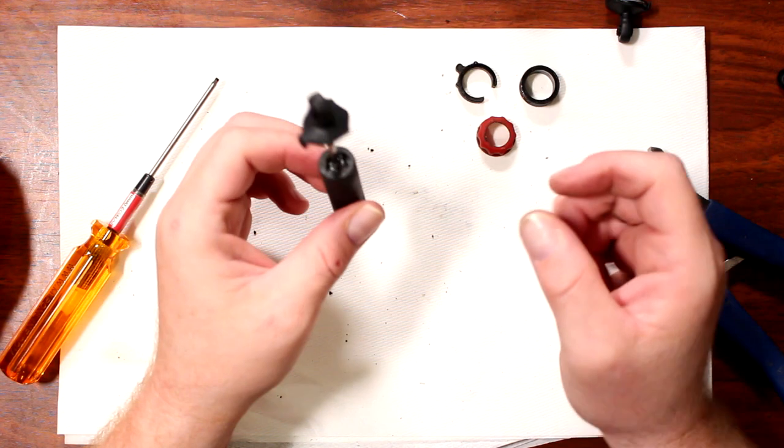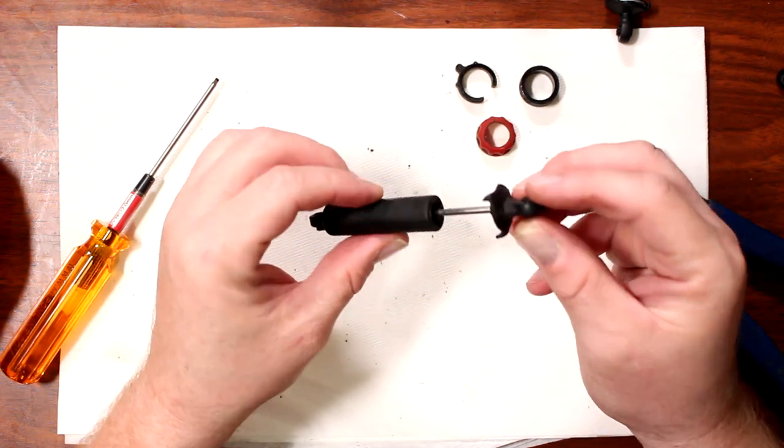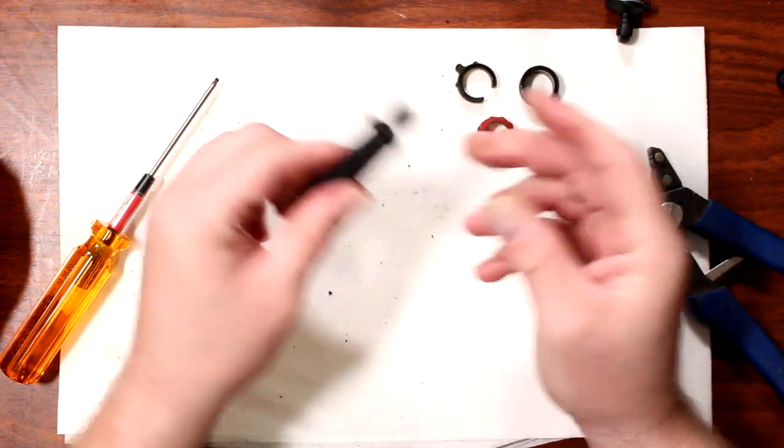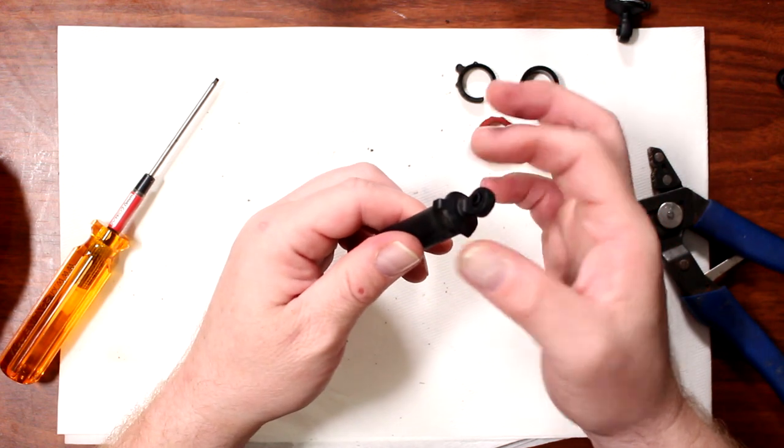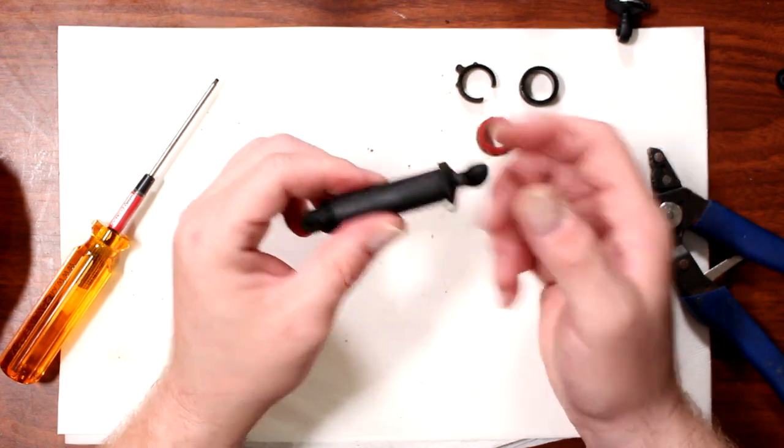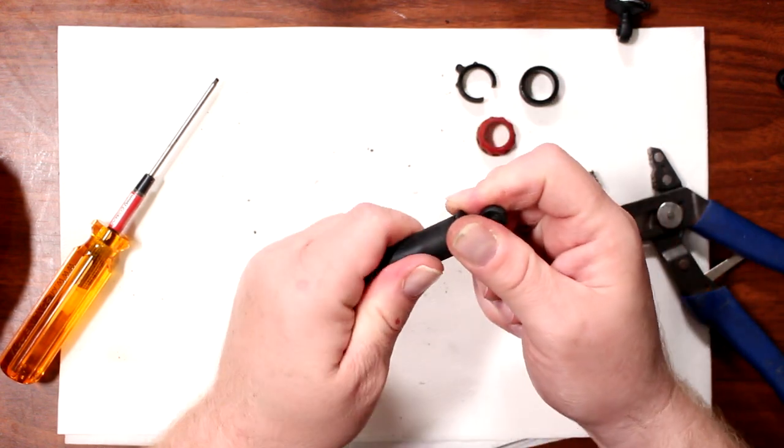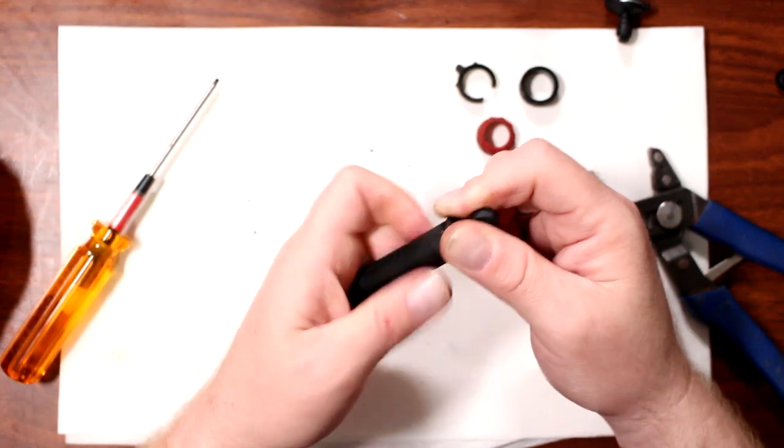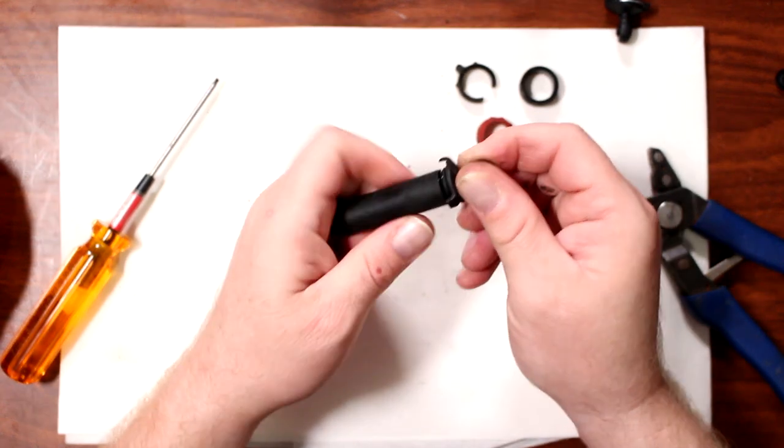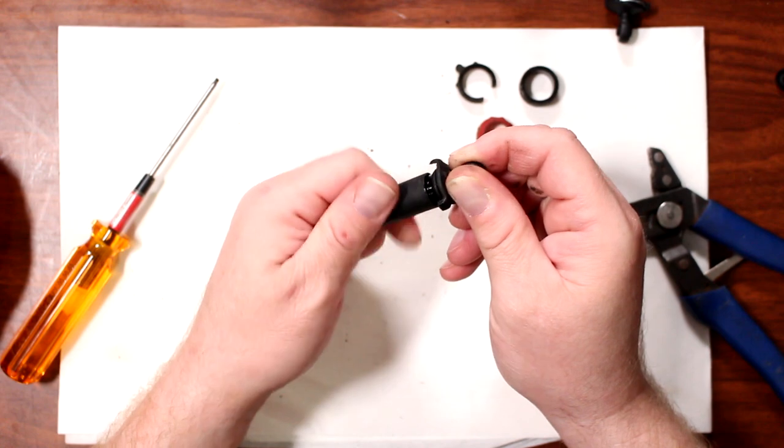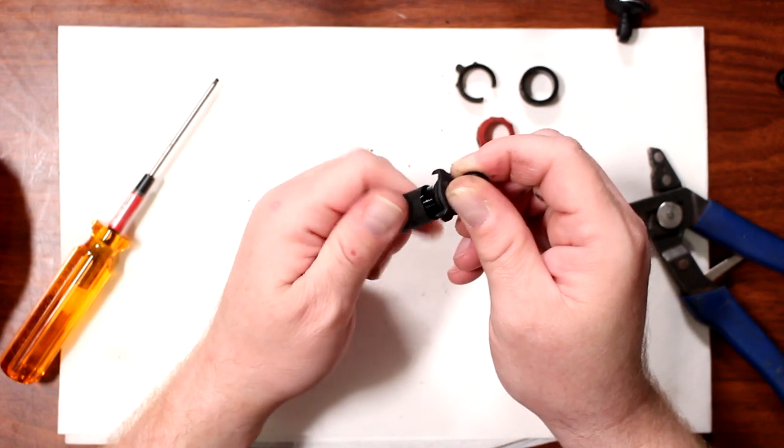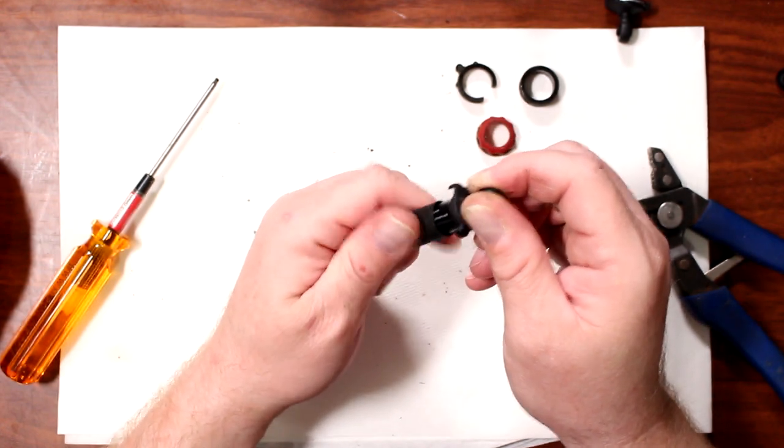Now the other thing you need to do is take your shock, completely compress it, and you're going to use this part of the shock to remove the bottom cap. You'll see it unscrewed itself, and you're going to unscrew for a little bit because it's not a small shock.